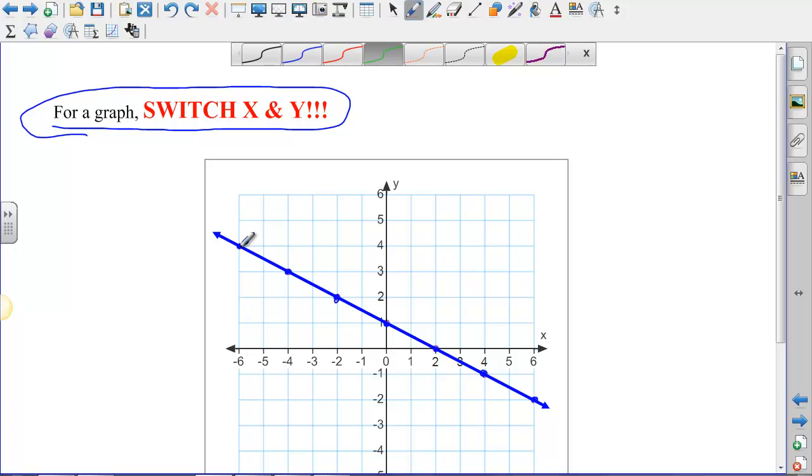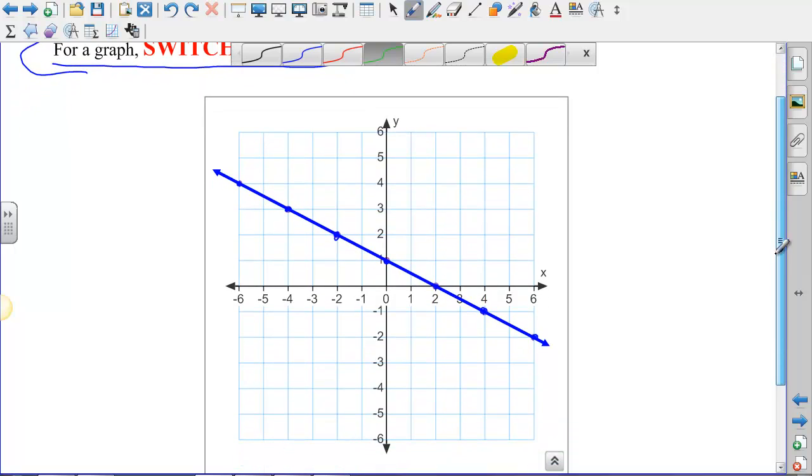So instead of having (-6, 4), I'm going to have (4, -6). Instead of having (-4, 3), I'm going to go to (3, -4). Instead of having (-2, 2), I'm going to go to (2, -2). (0, 1) becomes (1, 0). (2, 0) becomes (0, 2). (4, -1) becomes (-1, 4). And (6, -2) becomes (-2, 6).